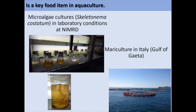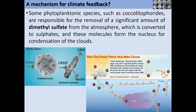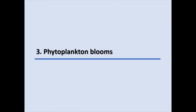Phytoplankton is also used to feed many varieties of aquaculture mold. Some phytoplanktonic species, such as coccolithophorids, are responsible for the removal of a significant amount of dimethyl sulfate from the atmosphere, which is converted to sulfate. These molecules form the nucleus for condensation of clouds. Now we will continue to speak about the blooms of phytoplankton.